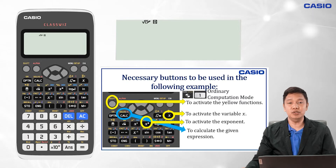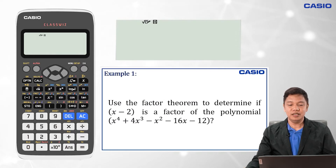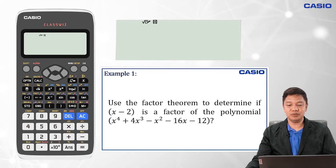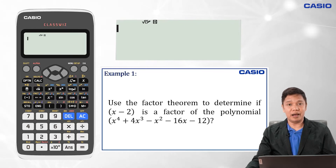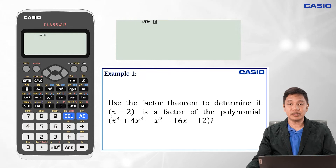Let us consider the first example. We are asked to use the Factor Theorem to determine if the binomial x minus 2 is a factor of the polynomial x to the fourth plus 4x cubed minus x squared minus 16x minus 12.